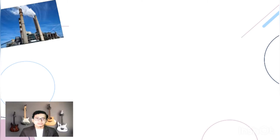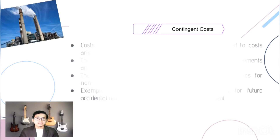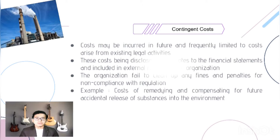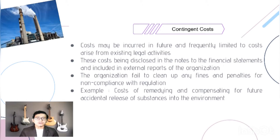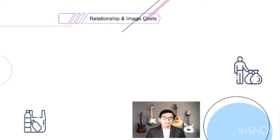The third tier is contingent costs. These costs may be incurred in the future and are frequently limited to costs arising from existing legal activities. They may be recognized within the organization's internal reports, declared in the notes to financial statements, and included in external reports. If an organization fails to comply, it may face fines and penalties. An example is the cost of remedying and compensating for future accidental release of substances into the environment.